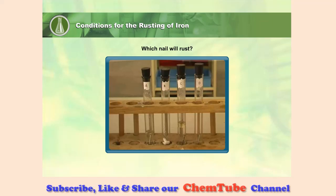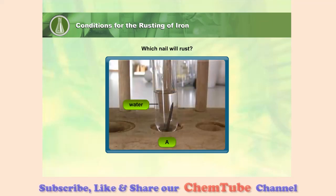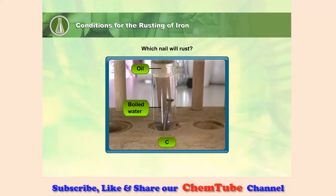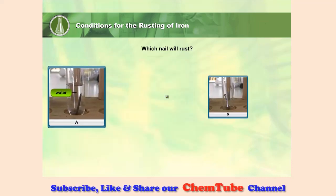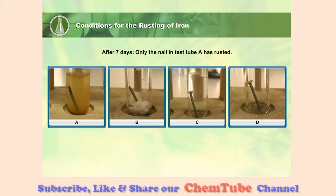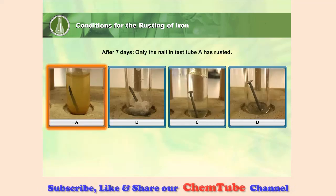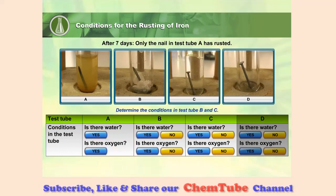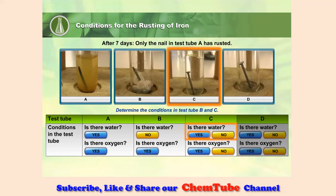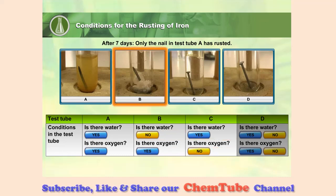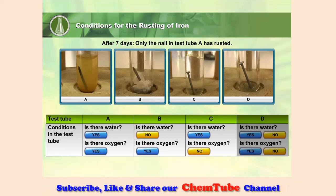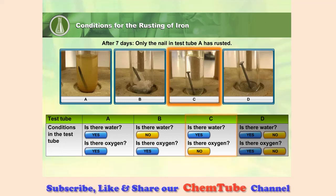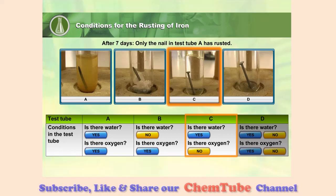Can you determine which nail will rust? Only the nail in test tube A has rusted. What causes the nail in test tube A to rust? The nail in the second test tube is exposed to oxygen but there is no water. The nail in the third test tube is exposed to water but there is no oxygen.